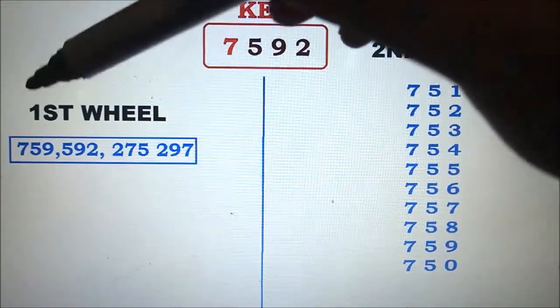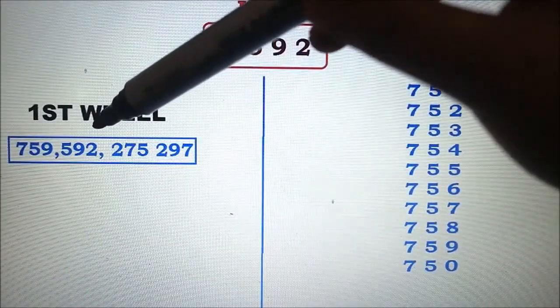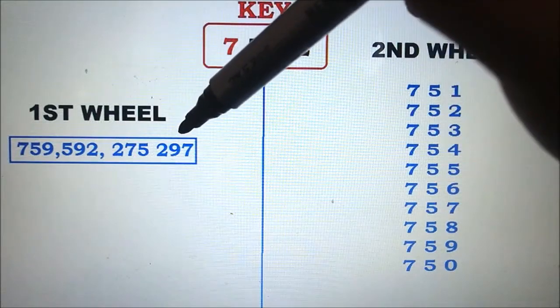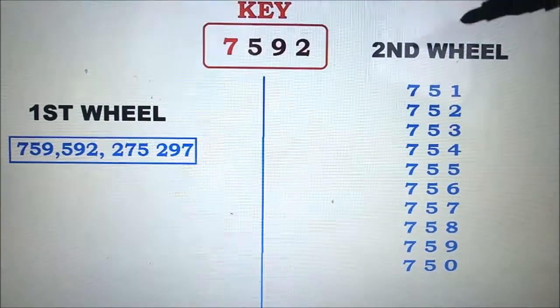So using the first wheel, our combinations are 7-5-9, 5-9-2, 2-7-5, and 2-9-7.